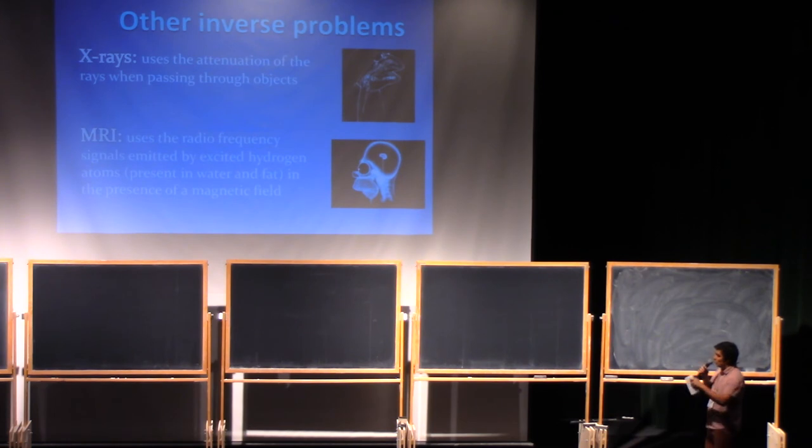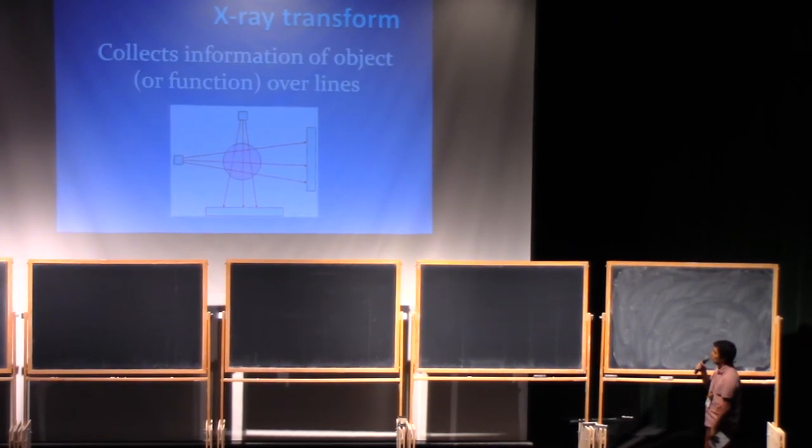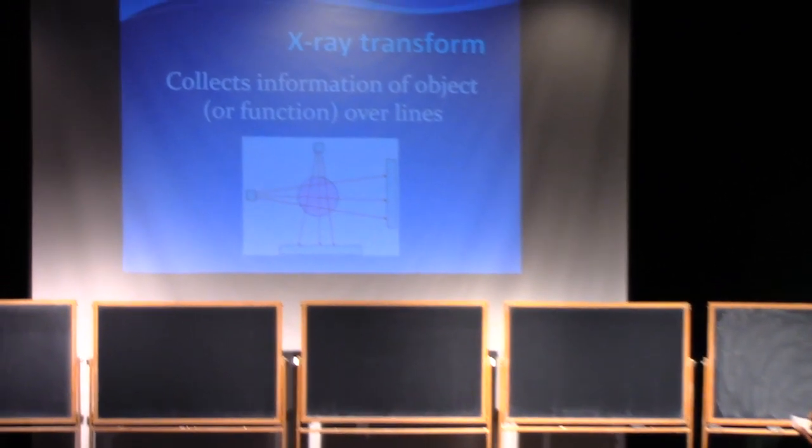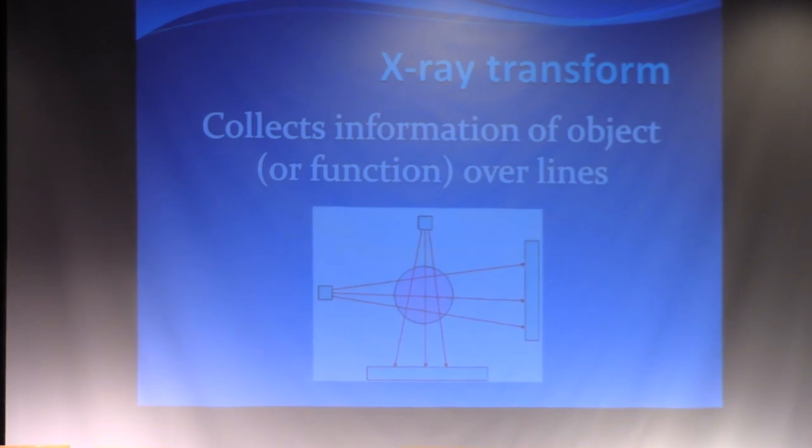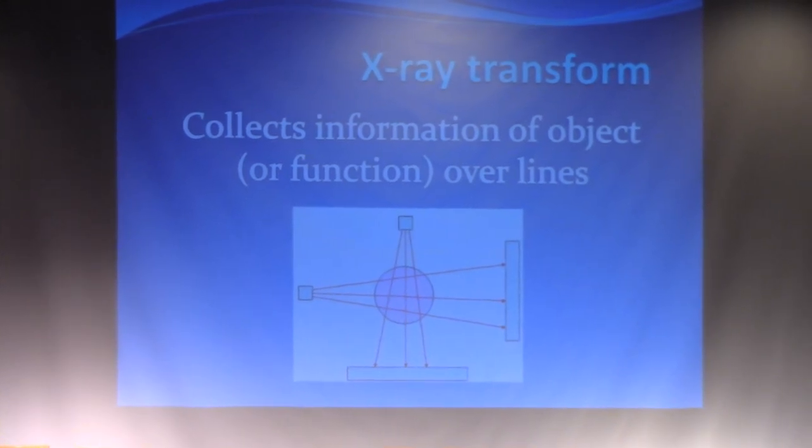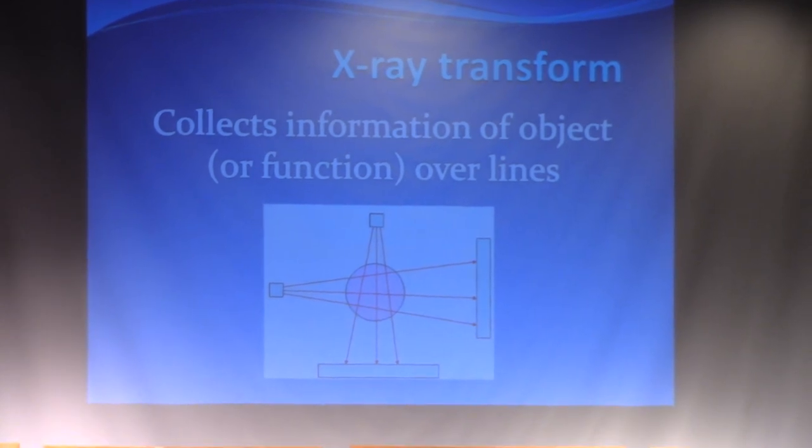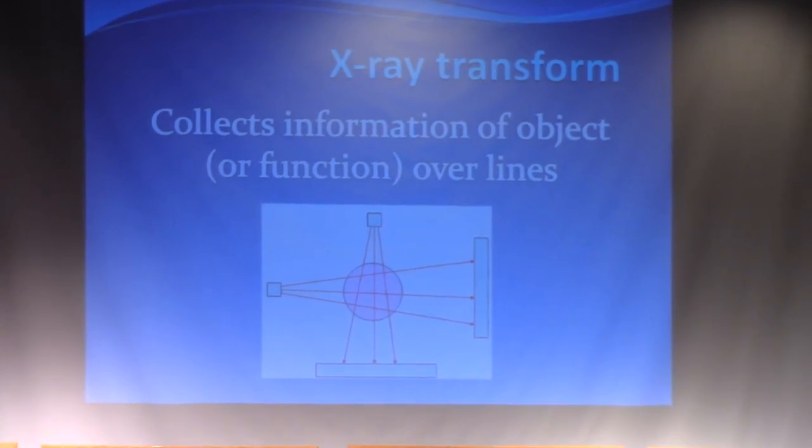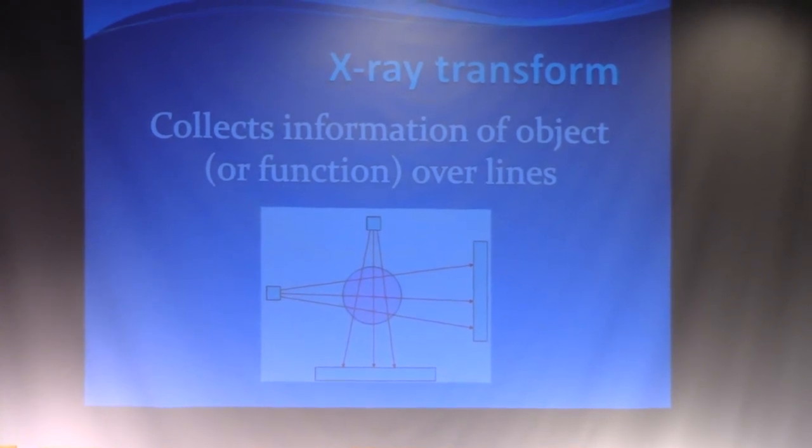For X-rays, what we have is an object, and we throw some rays and try to capture the information over these lines. Then we move the position, we move the inclinations, and people like to ask: can we say something about this shape? This is a problem that dates back to the 1920s, I think, and it turned out to be very useful in the past century.